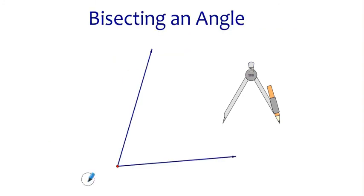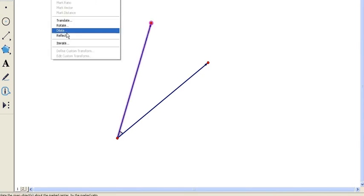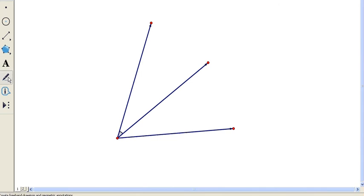Before we jump into the technique, let's do a little background research. If you start with an angle and reflect one of the sides around the other side, you get this picture. Notice that because we reflected it, the figure is symmetric, so these two angles must be the same.